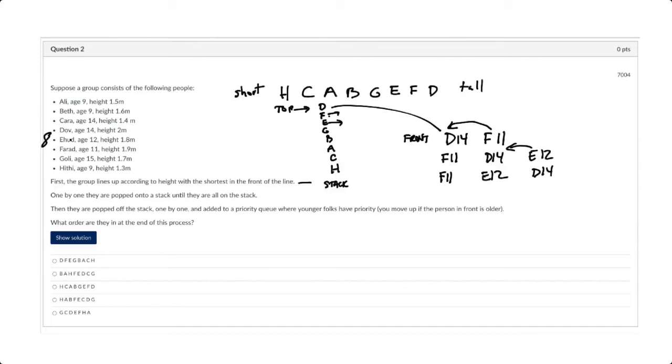And then Gully comes off, and Gully is 15, so Gully just stays at the end of the line. And then after Gully comes off, we have Beth, who's age 9. So Beth, age 9, is here. But Beth is going to move up, up, up, up, up until she gets to the very front.